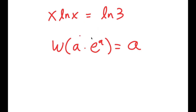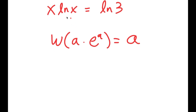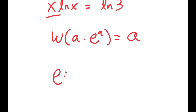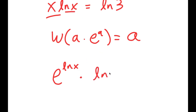I'm going to rewrite this so that it suits the W Lambert formula. We need to change this to be in the form a times e to the power of a. I'm going to rewrite x as e to the power of ln of x, because e to the power of ln cancel out, so x is all that remains. So x is the same thing as e to the power of ln x, and I have this times ln x is equal to ln 3.